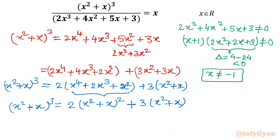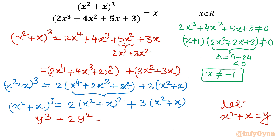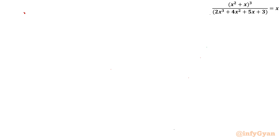This equation is now easy to handle with a substitution. Let y = x² + x. Bringing all terms to the left: y³ - 2y² - 3y = 0. Taking y common: y(y² - 2y - 3) = 0.